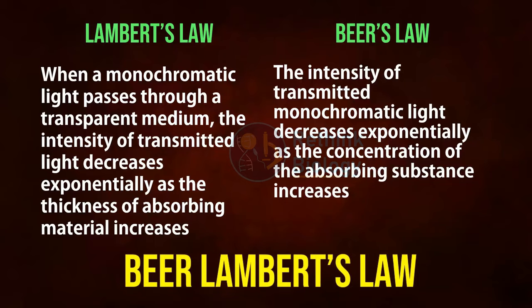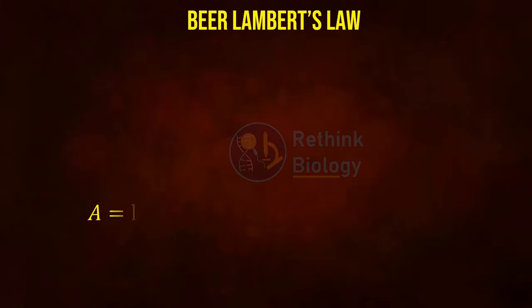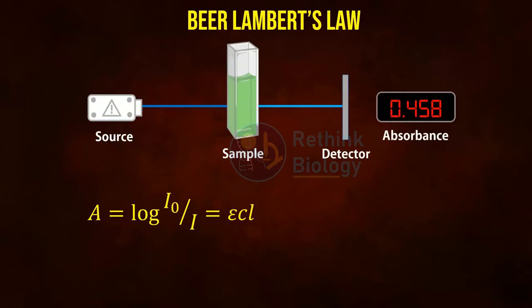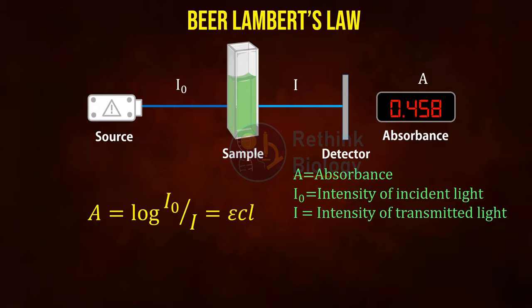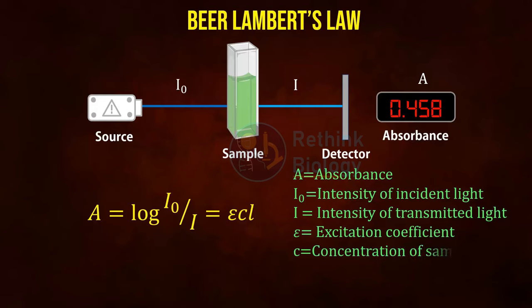Beer-Lambert's law can be expressed mathematically by the formula: A = log(I₀/I) = εcl, where A refers to absorbance, I₀ is the intensity of incident light, I is the intensity of transmitted light, epsilon (ε) is the molar extinction coefficient which is constant for a particular substance, C is the concentration of the sample, and L is the path length.